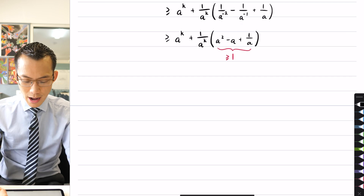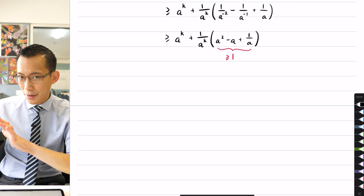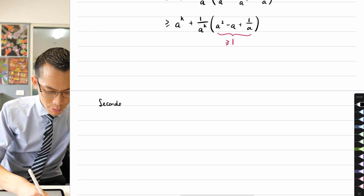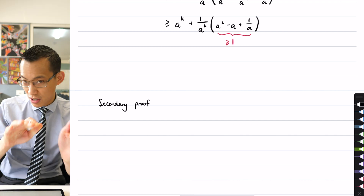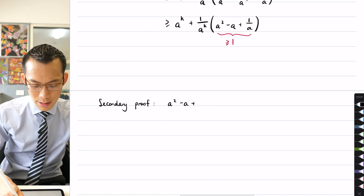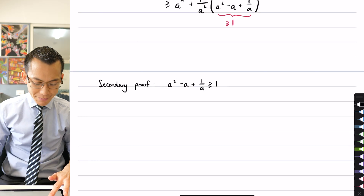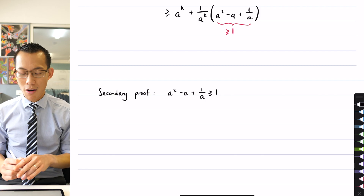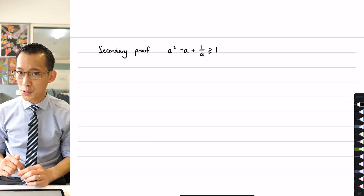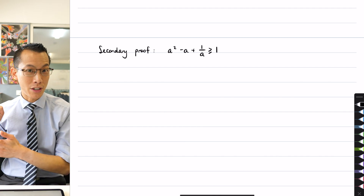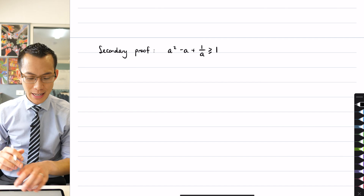I'm going to pull this out as a secondary form of notation — I'll prove this as a secondary proof, sometimes called an auxiliary proof, because it's just on the side. What I want to prove is that a squared minus a plus one over a is greater than or equal to one. You can go the calculus path with this if you want, but I'm interested in showing you different tools in your toolbox, drawing from the nature of proof.